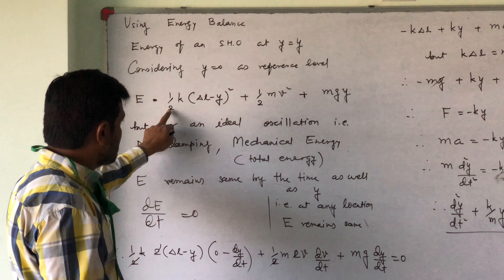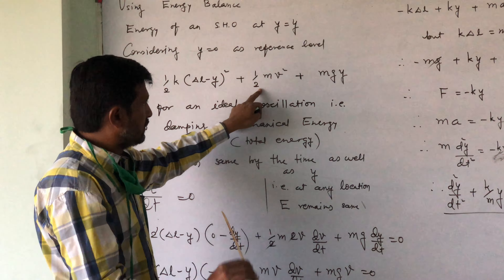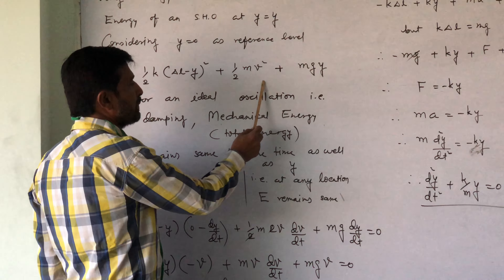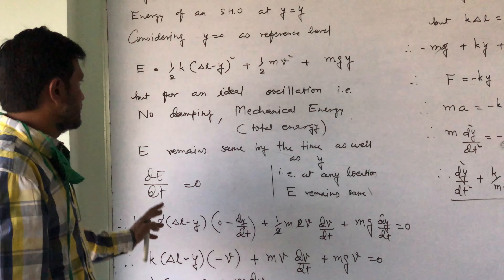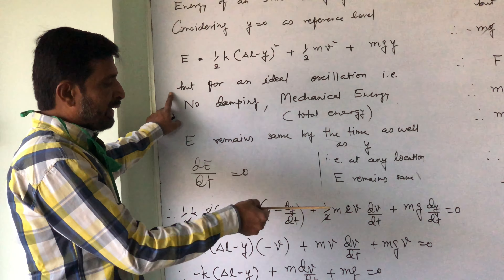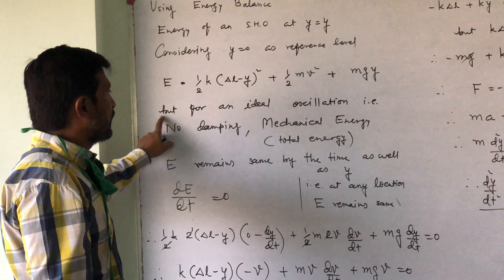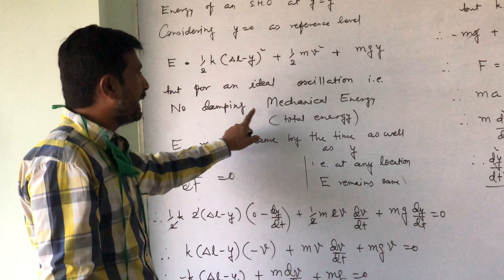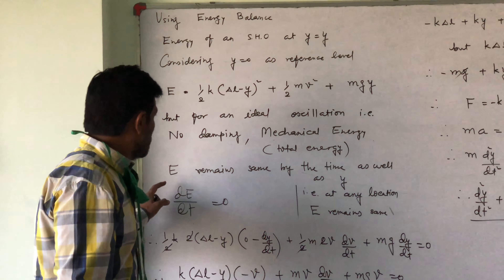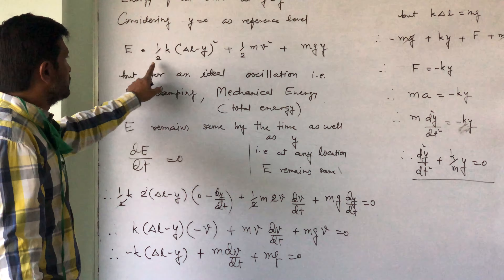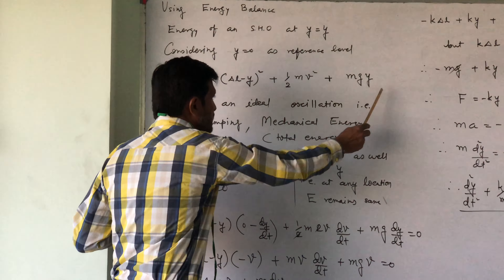The total mechanical energy is: E = ½k(δl − y)² + ½mv² + mgy, where ½k(δl − y)² is the elastic potential energy, ½mv² is the kinetic energy, and mgy is the gravitational potential energy (since the block is at height y from reference). For an ideal oscillation with no damping, mechanical energy remains constant, so dE/dt = 0.